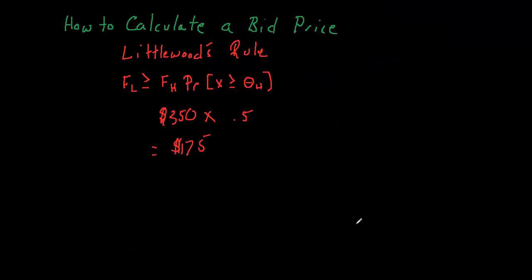So essentially, you could use Littlewood's Rule to calculate a bid price. Now, in practice, we don't really use Littlewood's Rule. We use EMSR, which is just a generalization of Littlewood's Rule. I like to explain things using Littlewood's Rule because it's simpler to understand the intuition, but you would actually use EMSR if you were trying to calculate a bid price using this relationship.